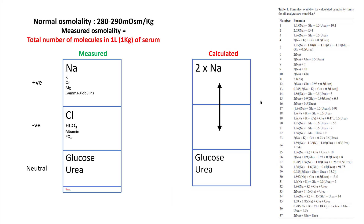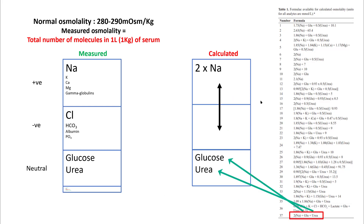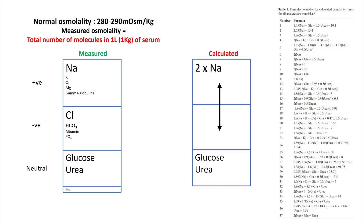Using the formula, you get osmolality as sodium multiplied by 2, plus osmolality of glucose and urea. Multiplying sodium by 2 accounts for the negative compartment as well, since sodium is the major positive ion in the positive compartment.